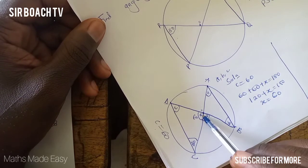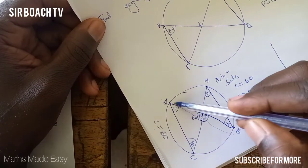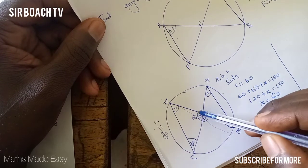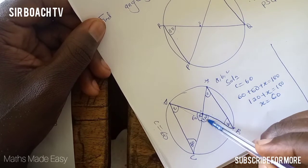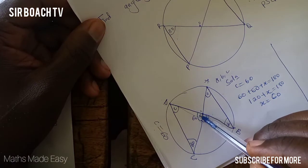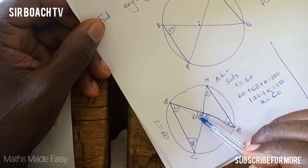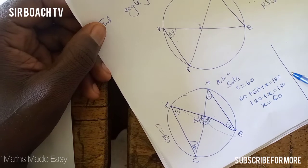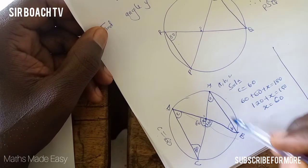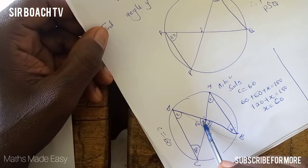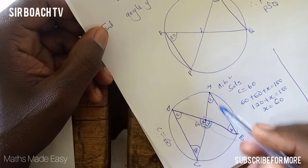Another way to solve for this: this line is a straight line, so the angles here will sum up to 180. If here is 120, then 120 plus X gives 180 and we still get 60 degrees. Now we want to find the remaining two angles. This angle and the angle opposite are vertical angles, so this angle here will also give you 60 degrees, and the opposite one will give you 120.